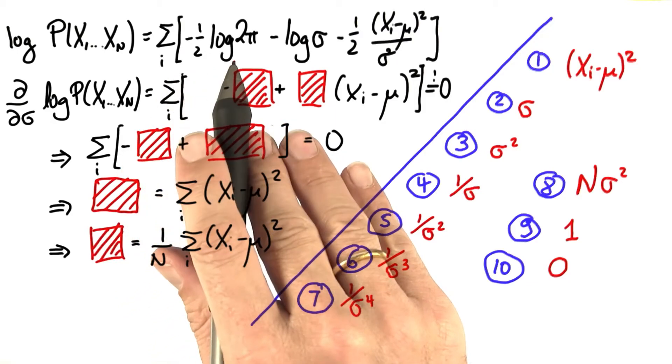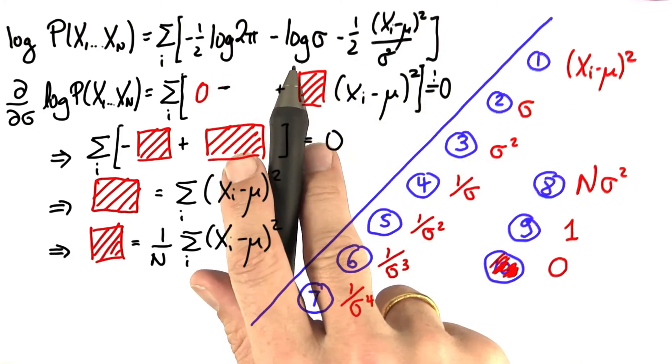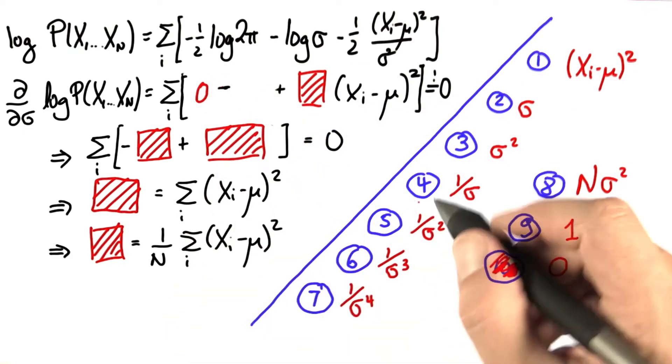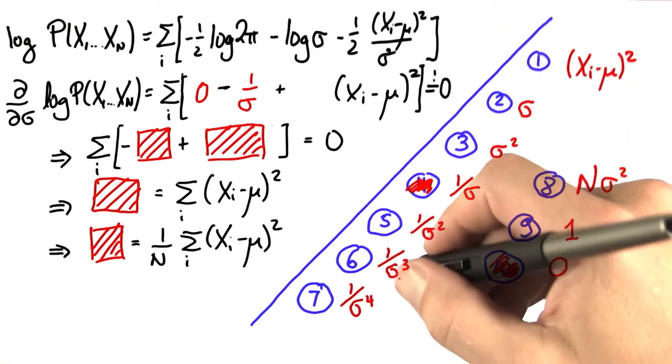So I start with the first expression. This one over here doesn't depend on sigma at all, hence the derivative is zero. The derivative of log sigma is 1 over sigma, and this expression is funky because we have a sigma to the minus 2 in the denominator.